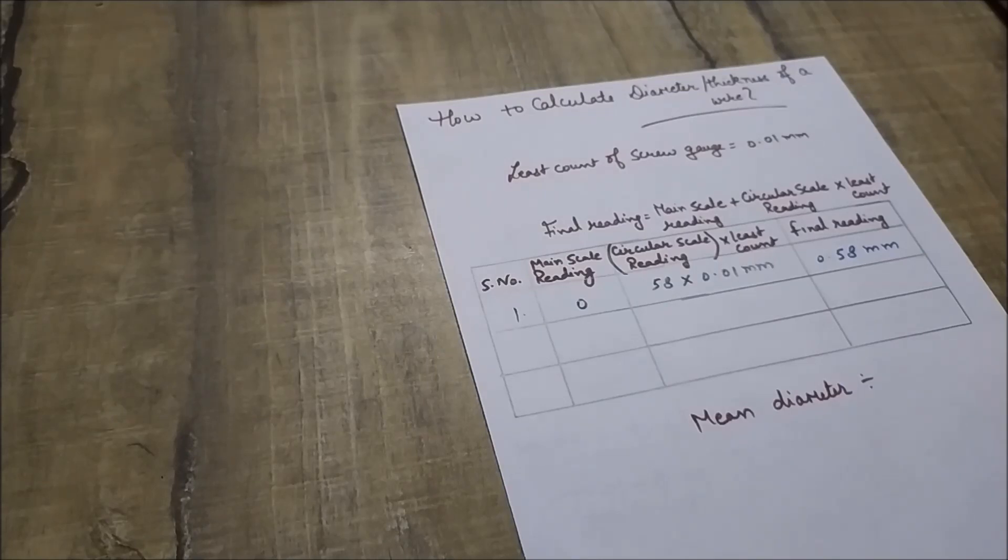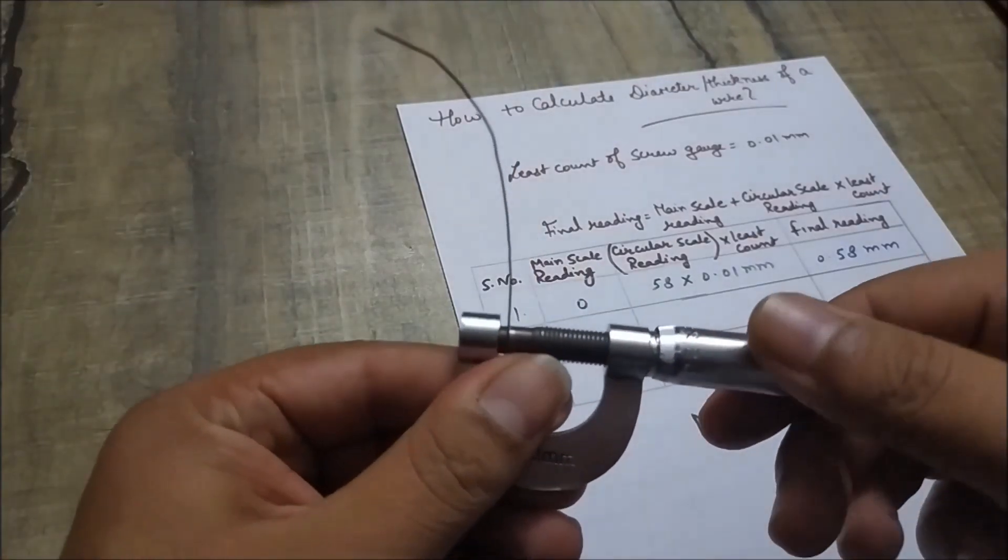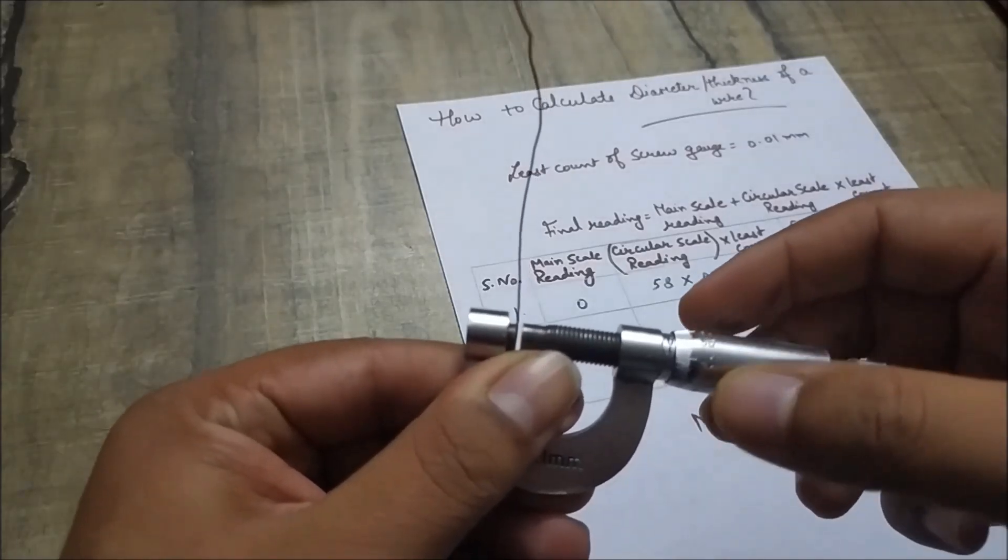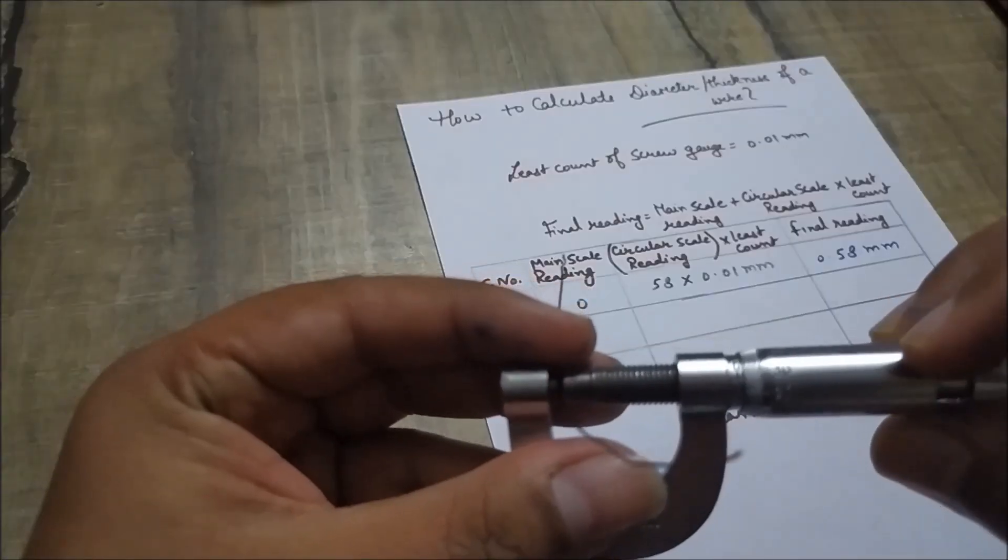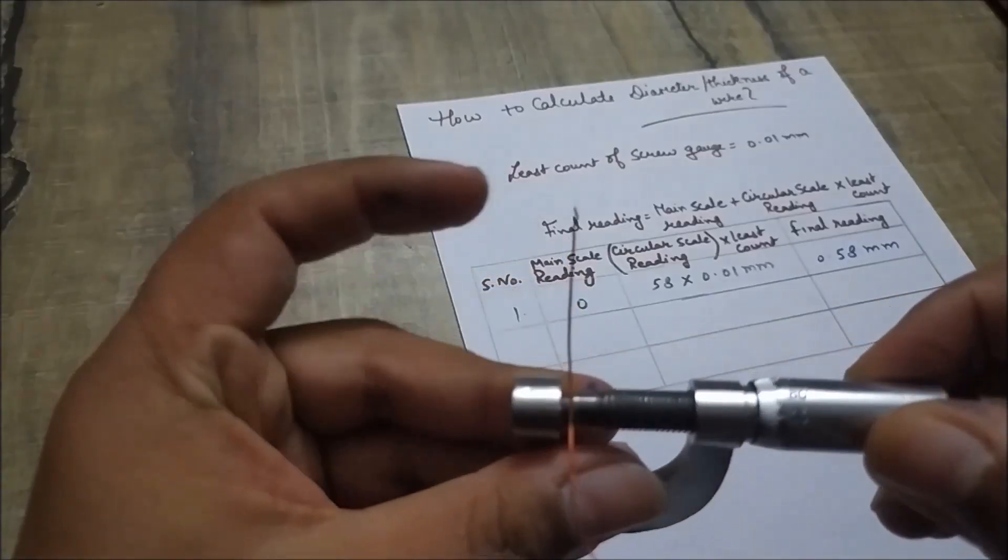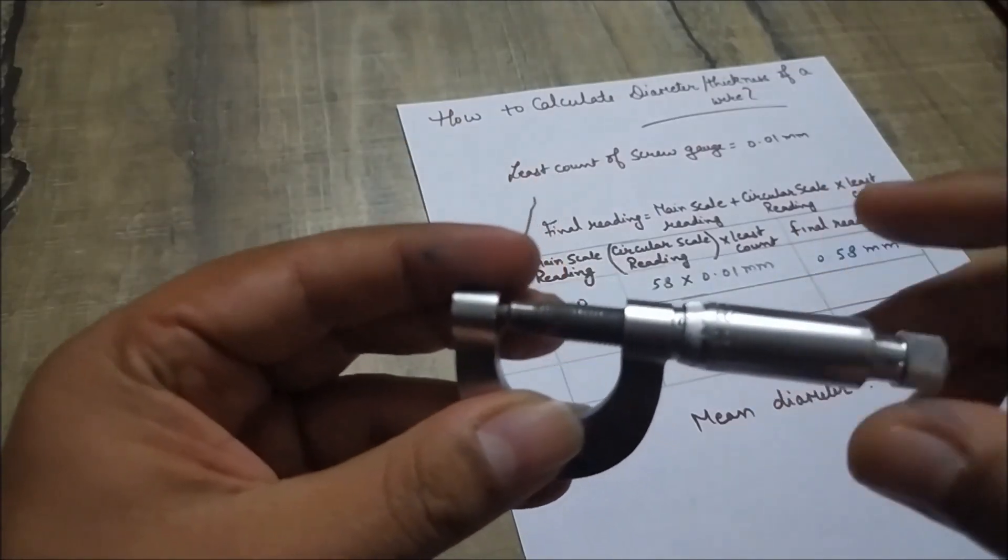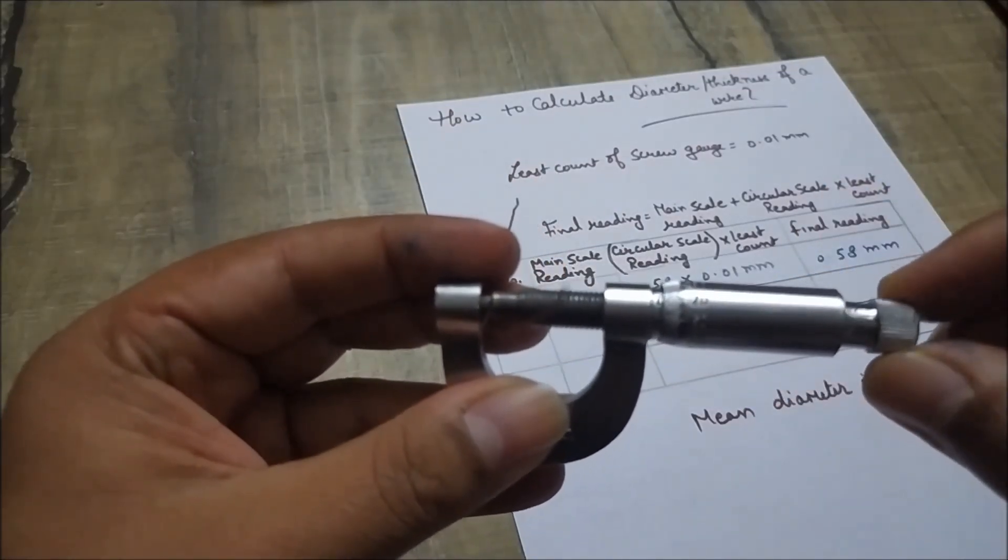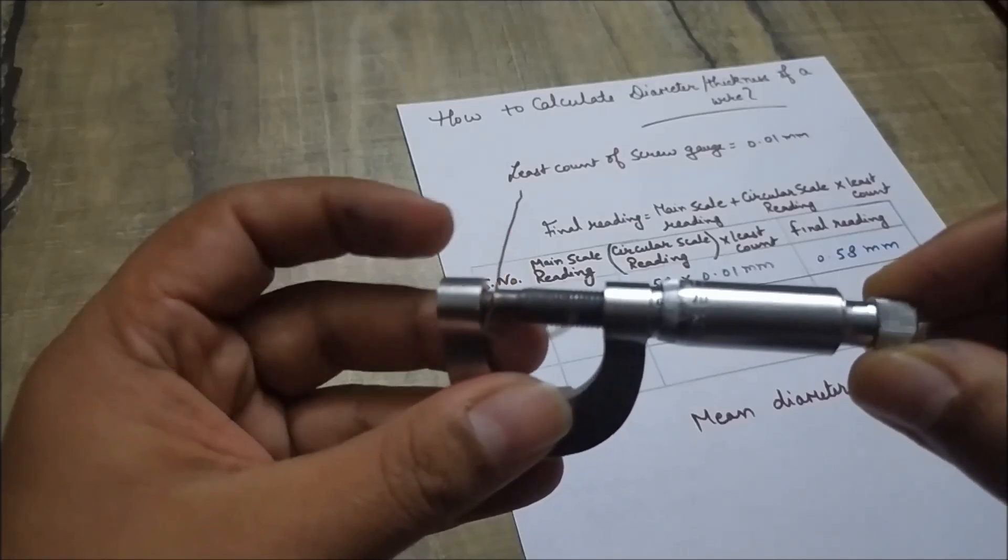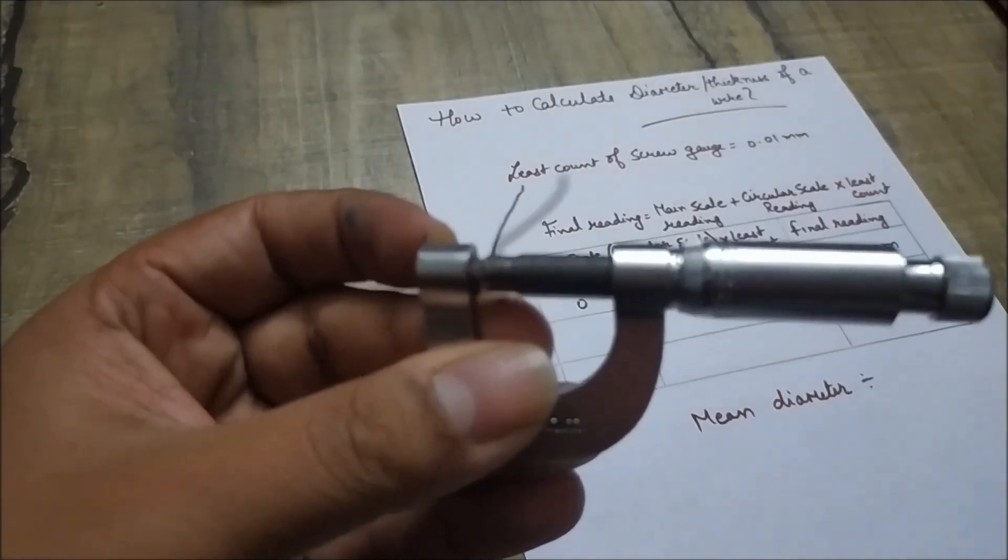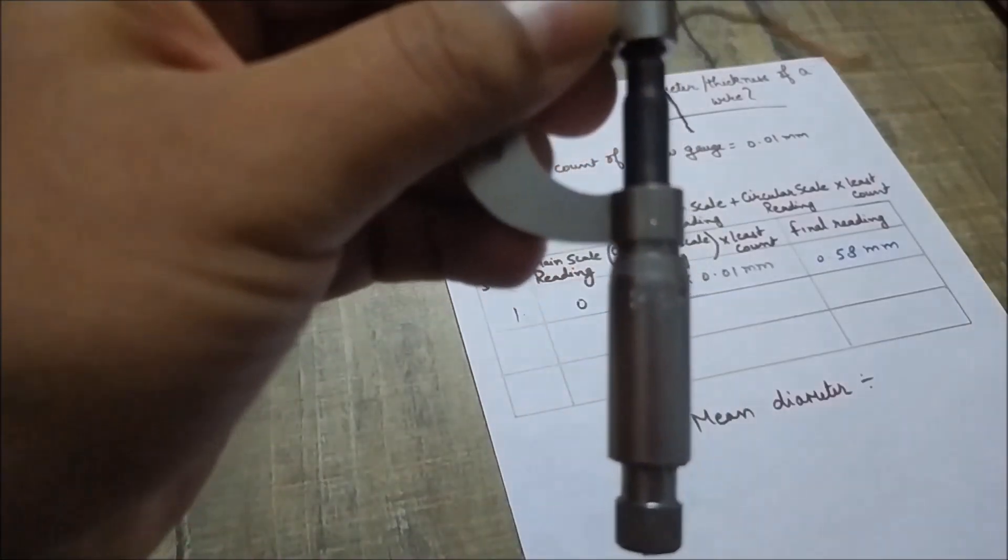So now let's proceed for the next reading. Now students, what you will do? You will simply again open this thimble. Now we will take the reading of diameter from some other point of wire. Again moving the gauge from ratchet. Now I have heard the sound of tick. Again noting down the reading.